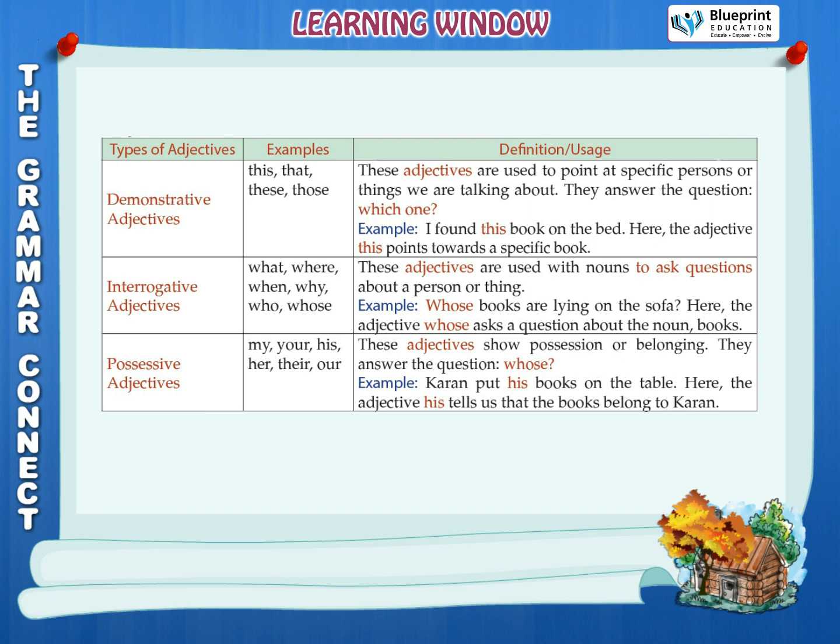Possessive adjectives — examples: my, your, his, her, their, our. These adjectives show possession or belonging. They answer the question: whose? Example: Karan put his books on the table — here the adjective 'his' tells us that the books belong to Karan.